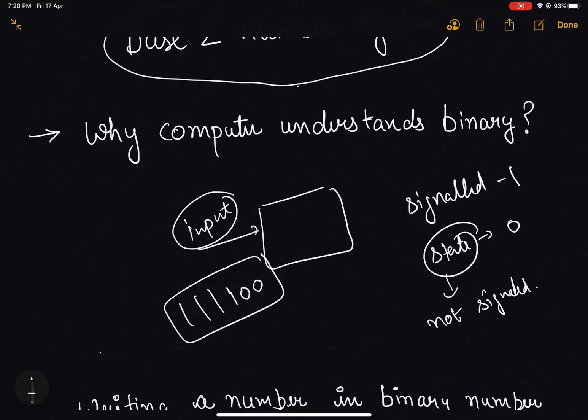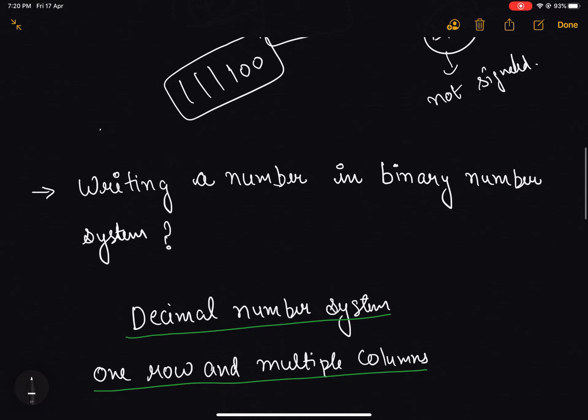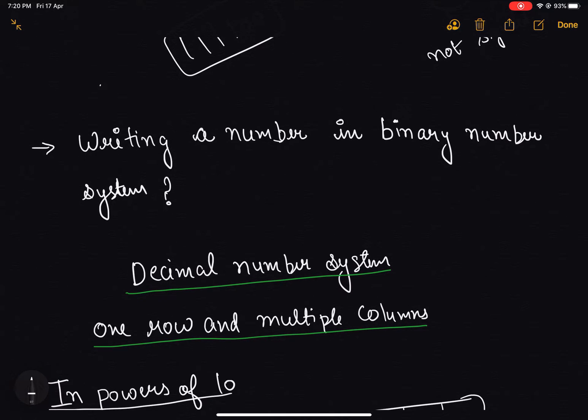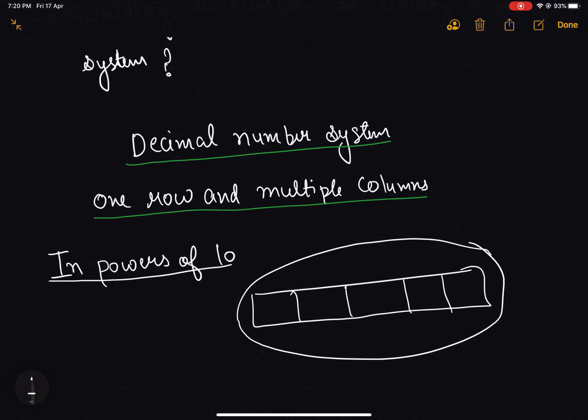Now let us see how to write a number in binary number system. To understand that, let's first explain the decimal number system. As we have seen in elementary school mathematics, we write numbers in one row and multiple columns. Let's say I want to write 125. In the rightmost column we will have 5, and this column corresponds to the tens digit.